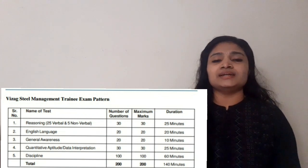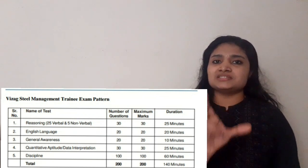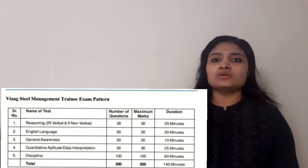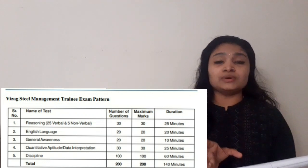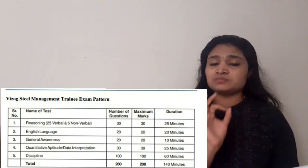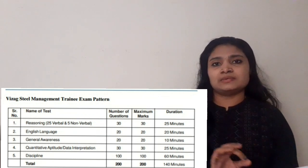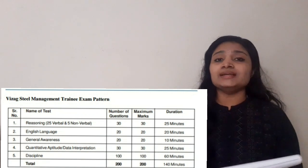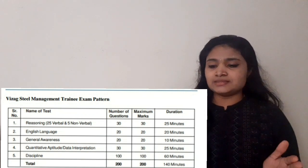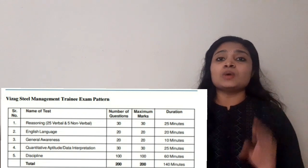For the electronics subject section you have to prepare all core subjects of electronics. You have to answer 100 questions, with a maximum of 100 marks allotted and a time duration of 60 minutes. In total, there will be 200 questions, 200 marks as the total mark, and the time allotted is 140 minutes.